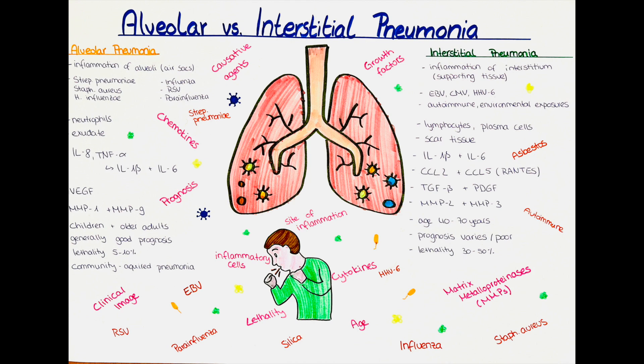Alveolar pneumonia, also known as lobar pneumonia, is a type of pneumonia that affects a large area of one or more lobes of the lung. It is characterized by inflammation of the alveoli, the tiny air sacs in the lungs where oxygen and carbon dioxide are exchanged. This inflammation causes the alveoli to fill up with fluid, pus and inflammatory cells, which can make it difficult to breathe.